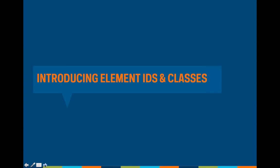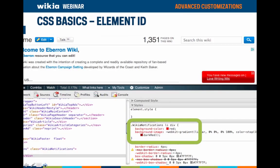Many wikis like to define different designs depending on the type of page or location within the wiki — this is all possible in CSS, you just need to dig deeper. If there is a distinct feature you'd like to apply CSS to, you can use something called an element ID. This allows you to specifically call out that element by its name on your CSS page and modify only that element's characteristics. Examples include notification bubbles, the wordmark, navigation, or the search box.